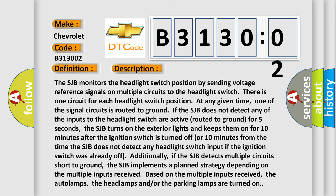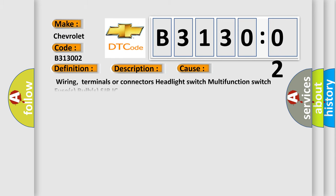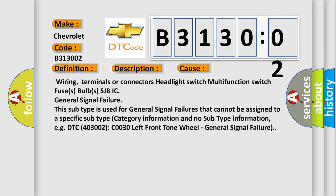This diagnostic error occurs most often in these cases. This subtype is used for general signal failures that cannot be assigned to a specific subtype category information and no subtype information, e.g. DTC 4003002, C0030 left front tone wheel, general signal failure.